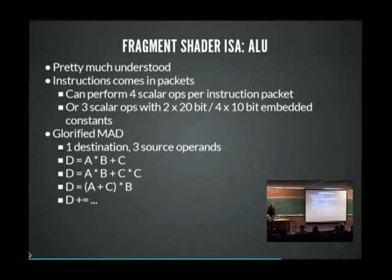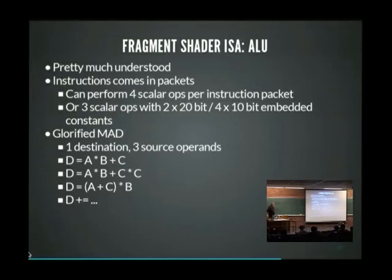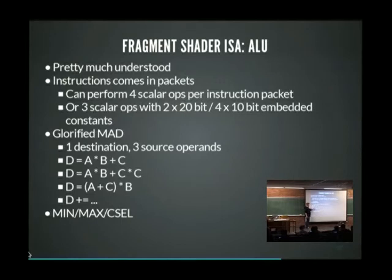There's also a bit that seems to mean it accumulates the result - the destination register just adds to it, using some kind of special accumulation register. It also has min, max, and conditional select. My understanding is that when you change MAD to min, you still get the C component stuff, so it still tries to add C - you just pass zero in for C instead, so it's not a problem.